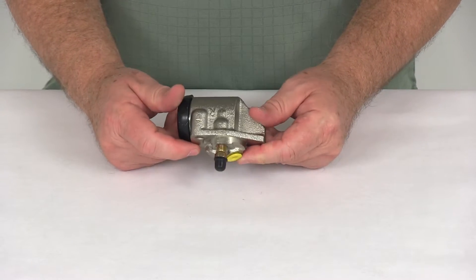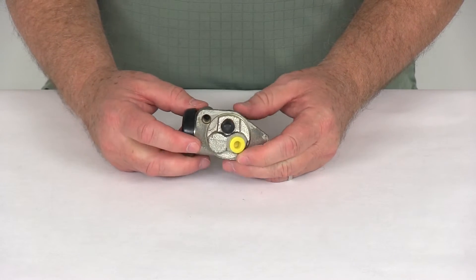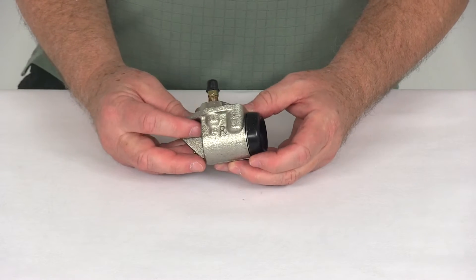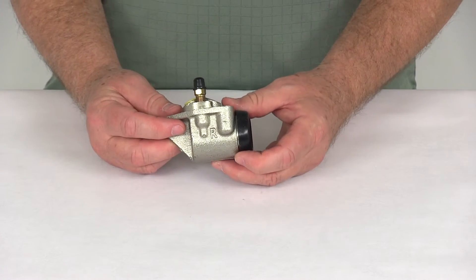But that should do it for the review on the replacement right side uniservo wheel cylinder for 10-inch, 12-inch, and 13-inch Titan brake assemblies.